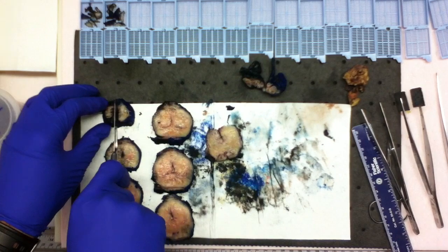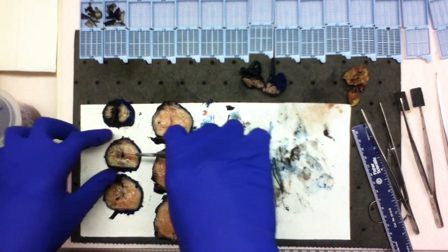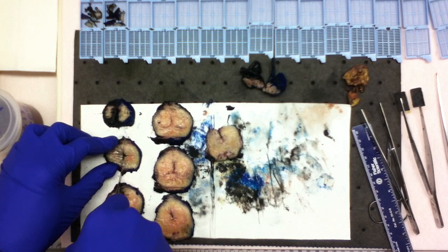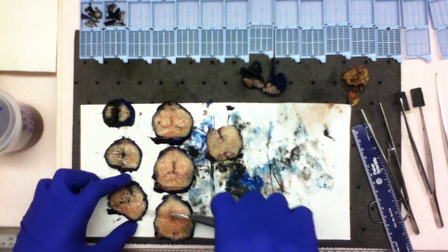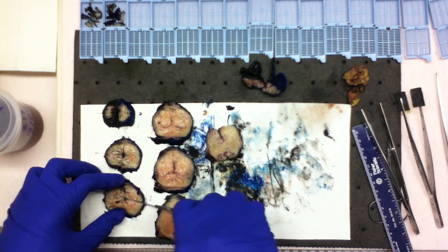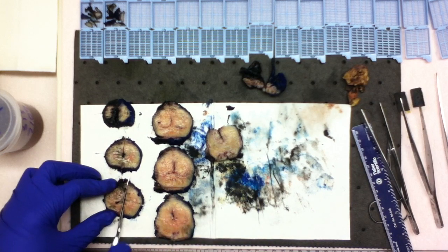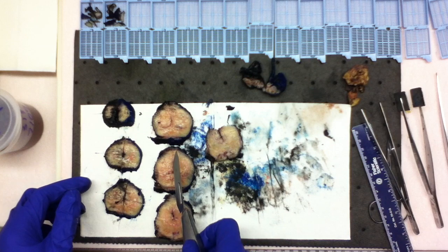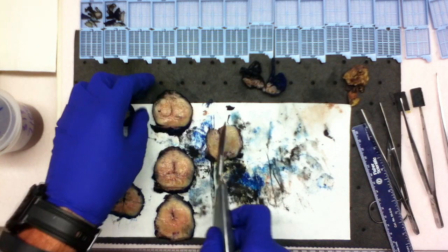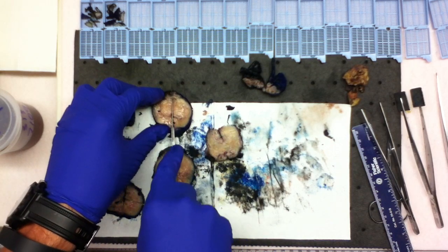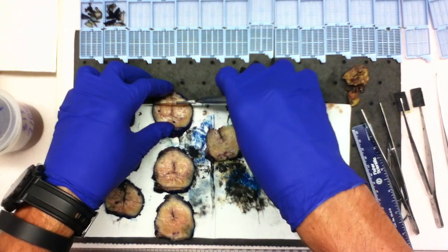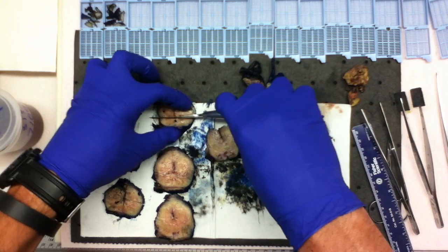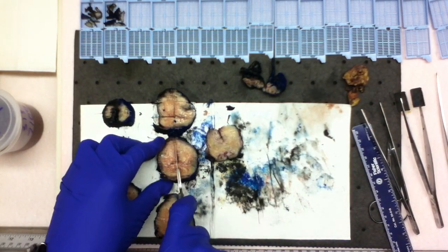And to do so, I'm going to section the prostate slices in a manner that they will fit in the cassette. Sometimes that's going to be four equal slices, and in these slices I actually could go with six slices just because they are so large. You'll get a feel for what you can fit into a cassette and what you can't.